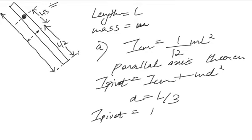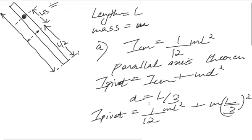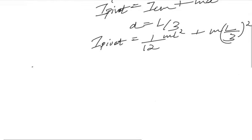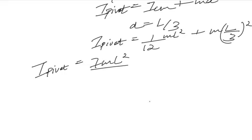That will be equal to ML squared by 12 plus M times L by 3 squared, so this comes out to be I_pivot equals 7ML squared by 36.